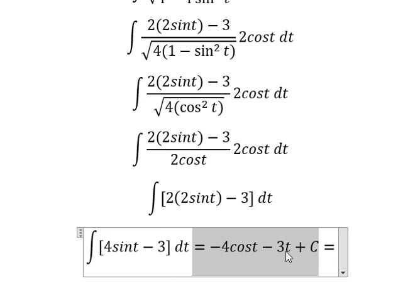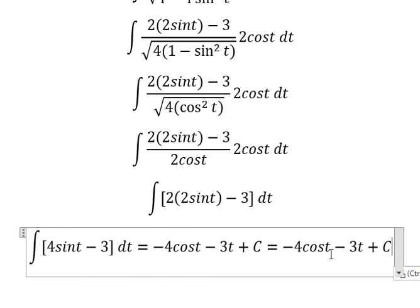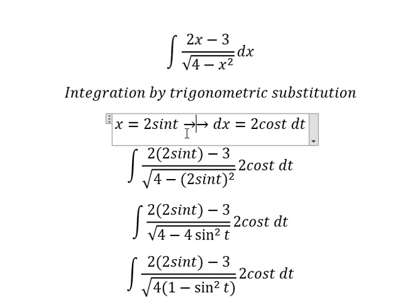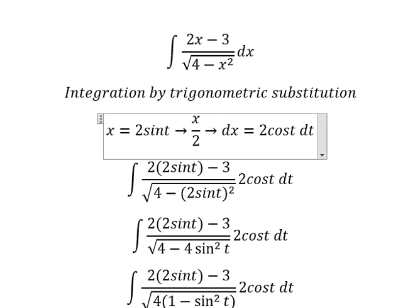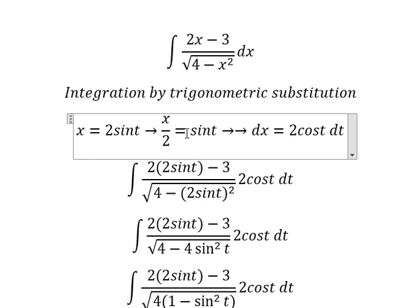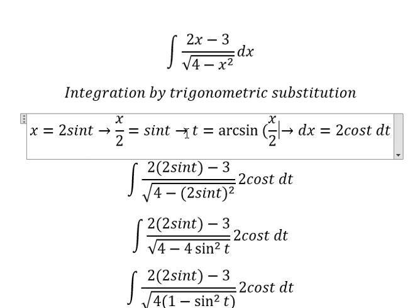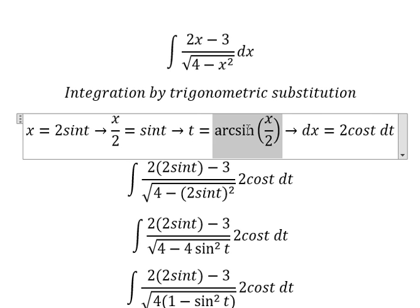About t. That is about this one. So we divide both sides by number 2. About t, we change for arcsin of x over 2. So we put this one to replace for t.